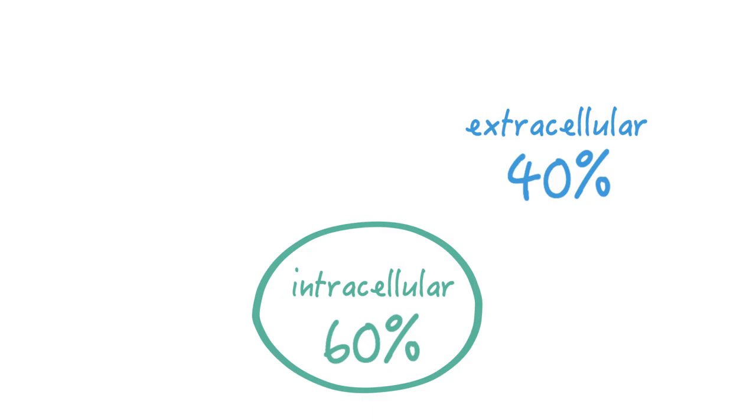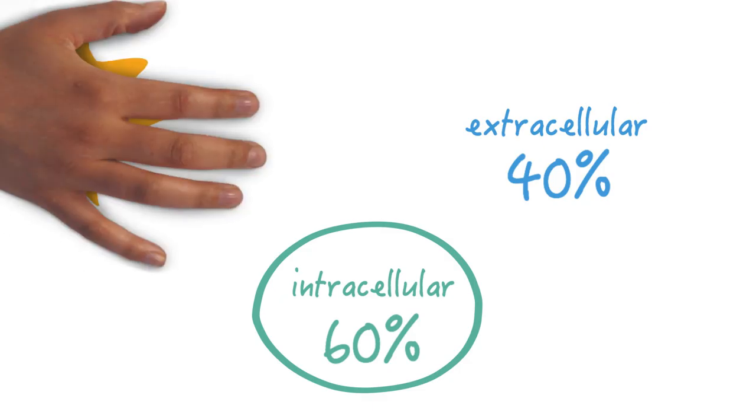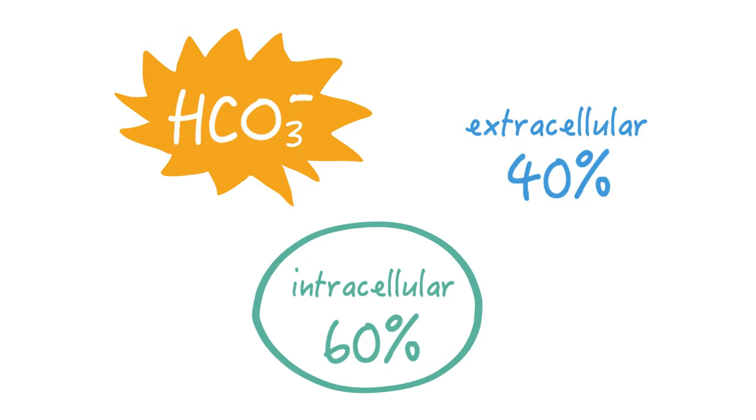The primary buffer in the extracellular compartment is bicarbonate. Let's see what happens when acid is added into the body.